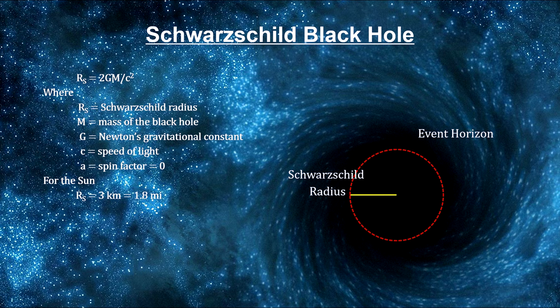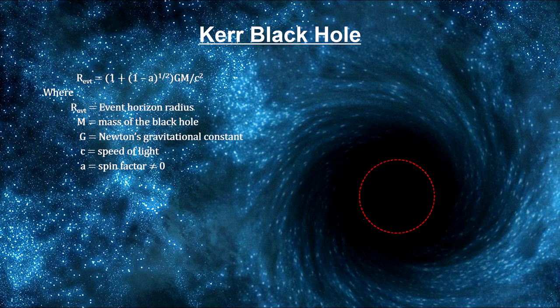But it would be the rare black hole that doesn't spin. In 1963, Roy Kerr developed a general solution for spinning black holes.